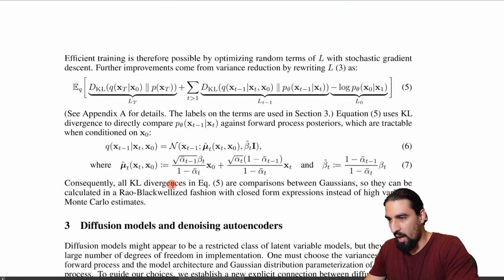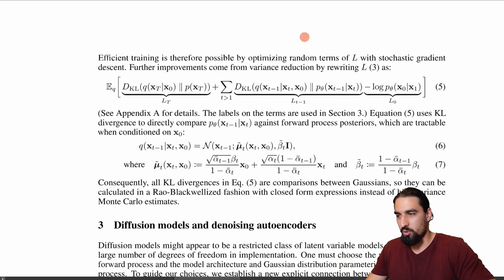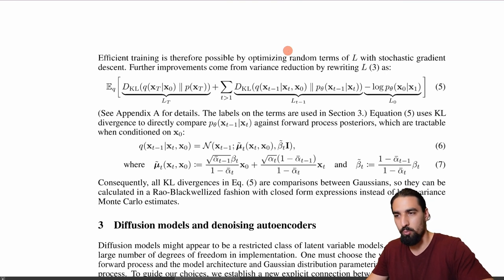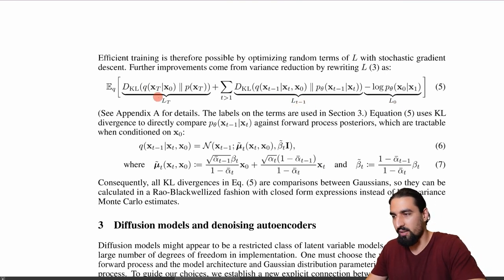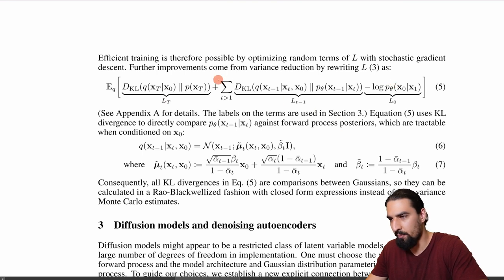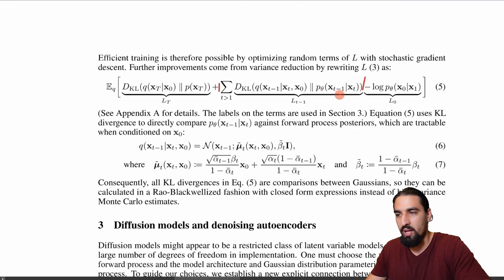I mentioned the loss we'll be using. Here it is reshaped into different forms — this is the actionable form we'll use in code. We have L_0, L_{T-1}, and L_T — three classes of similar components. L_{T-1} is super important: it's basically the KL divergence between one step of the reverse process and the forward process posterior.